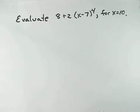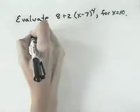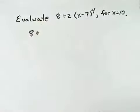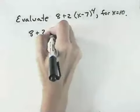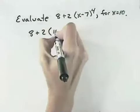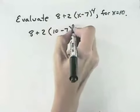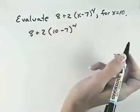Evaluate 8 plus 2 times the quantity x minus 7 raised to the 4th power for x equals 10. We write down the expression: 8 plus 2, but where the x was, we replace it with 10 and leave everything else the same, so we have minus 7 to the 4th power.